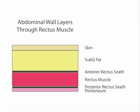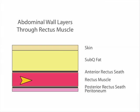Here the layers of the abdominal wall are graphically shown. Below the skin there are five visually distinct layers: first is the subcutaneous fat, then the anterior rectus sheath, the rectus muscle itself, the posterior rectus sheath, and then the peritoneum.